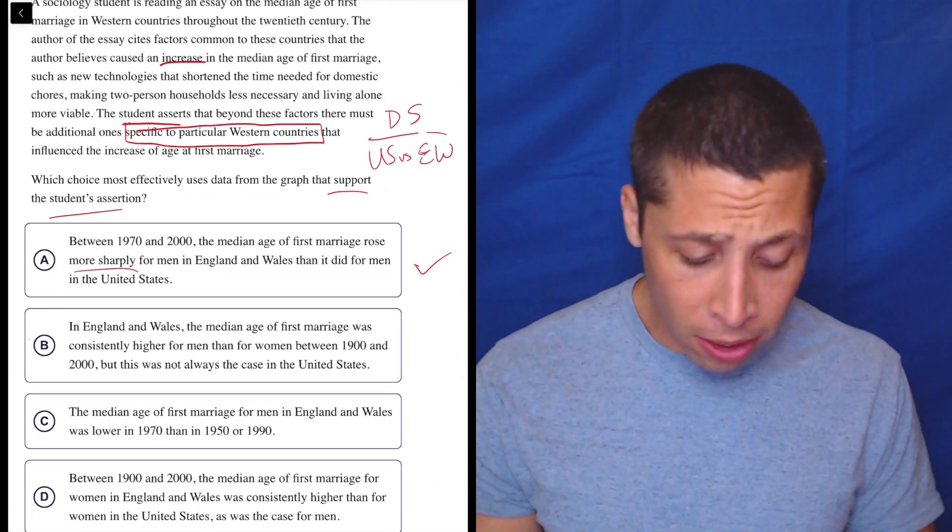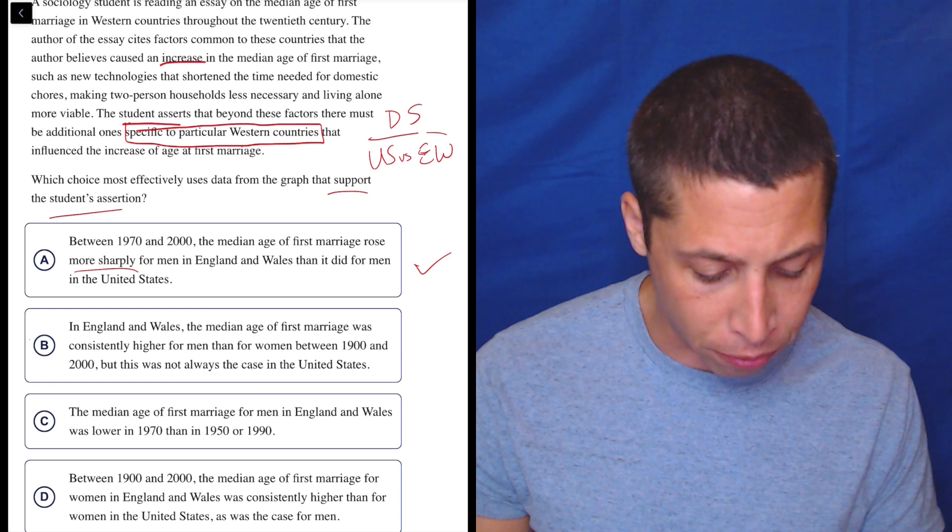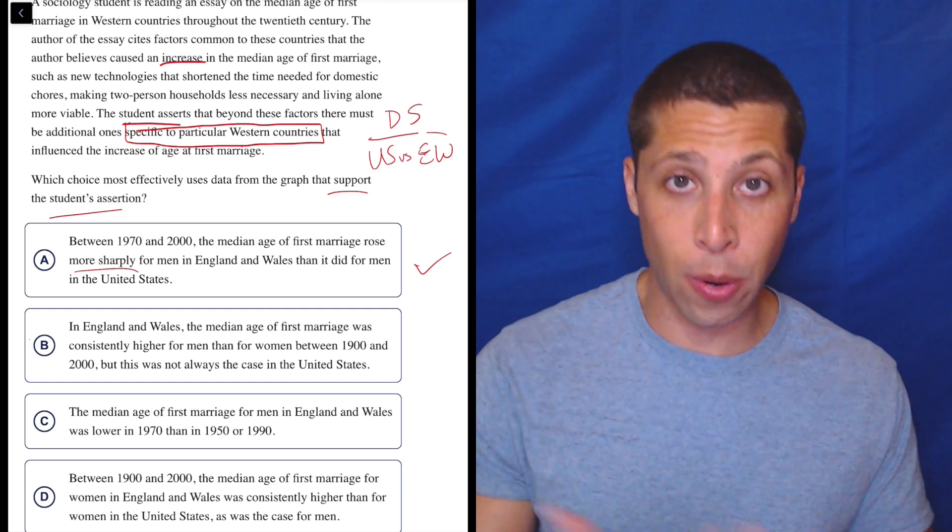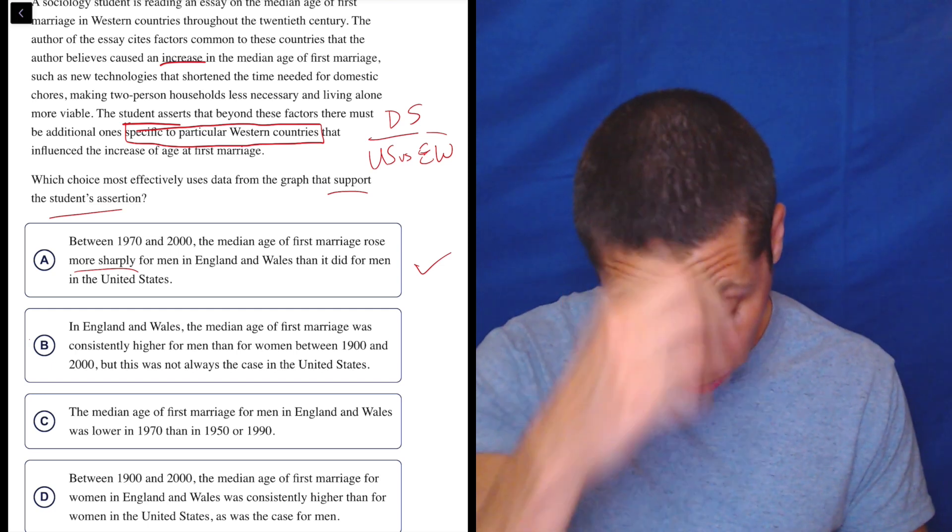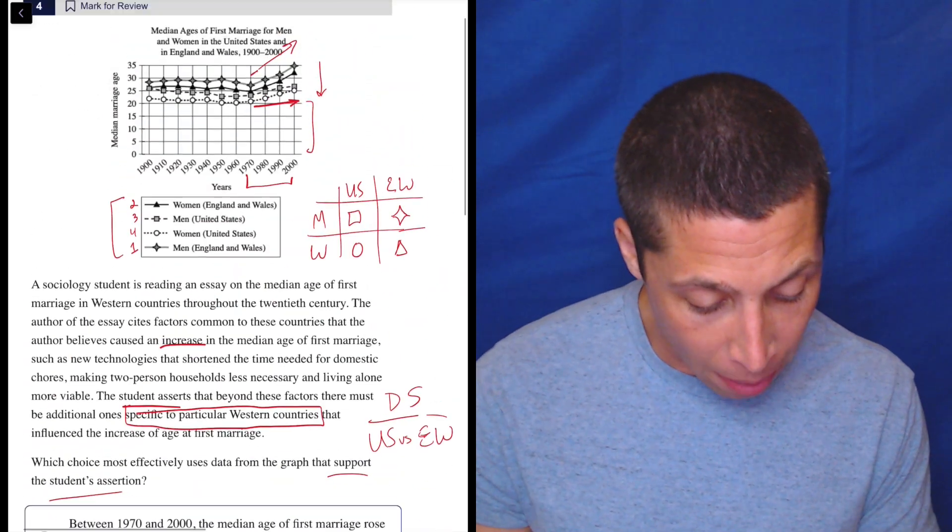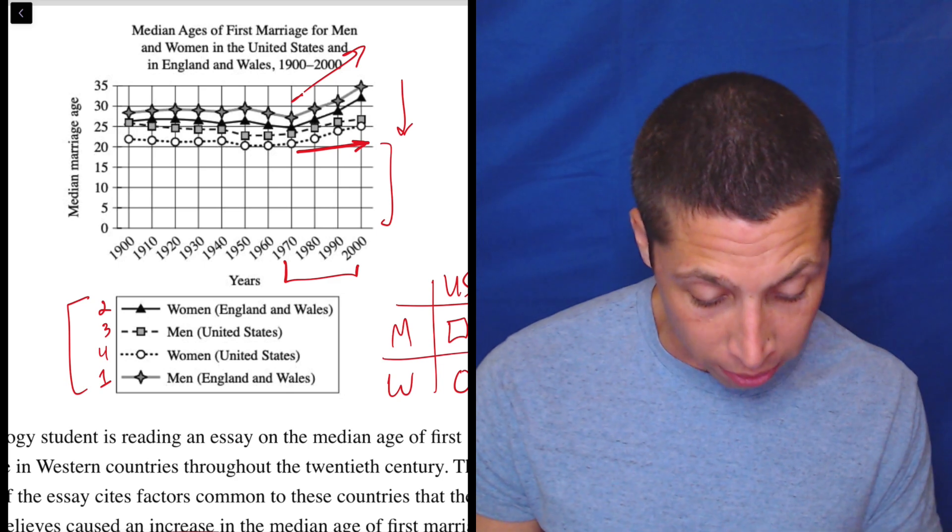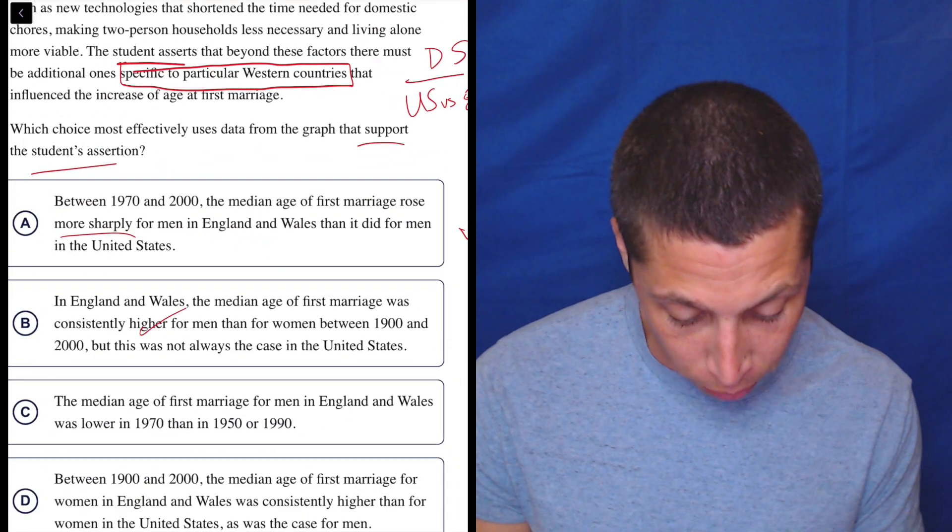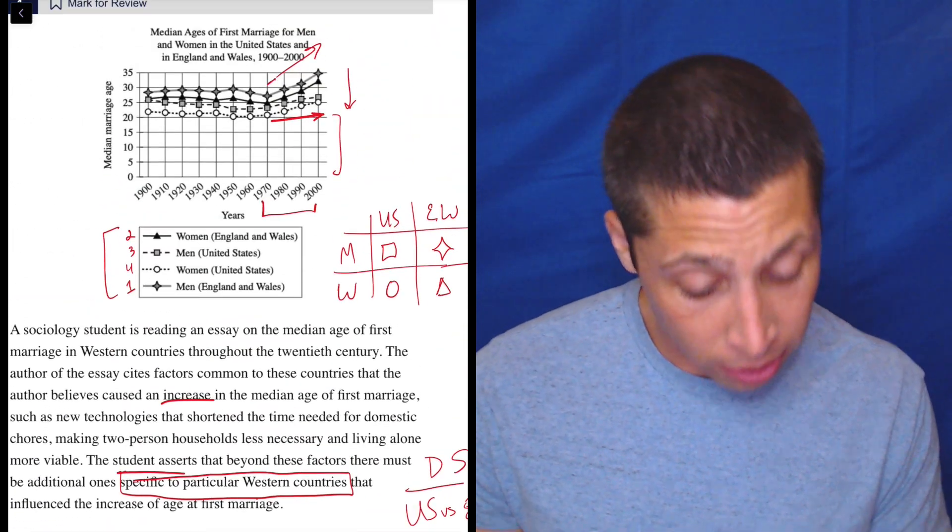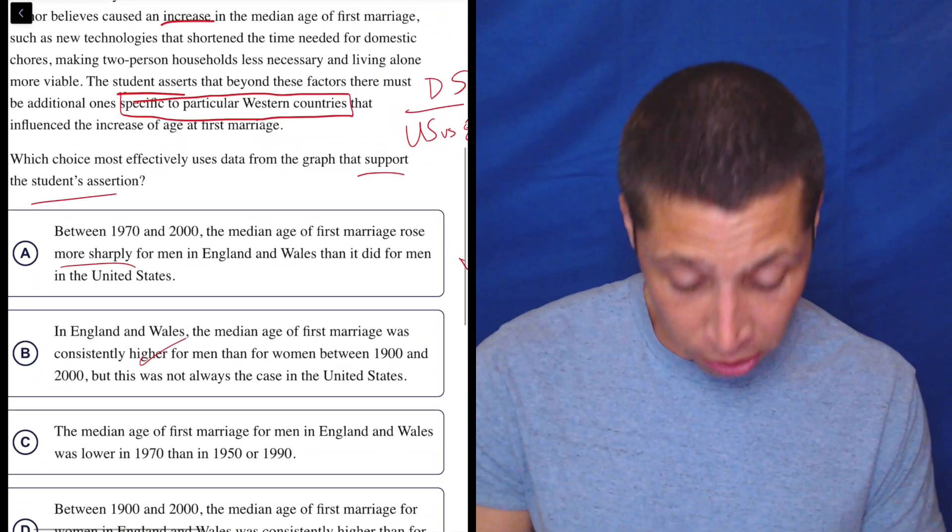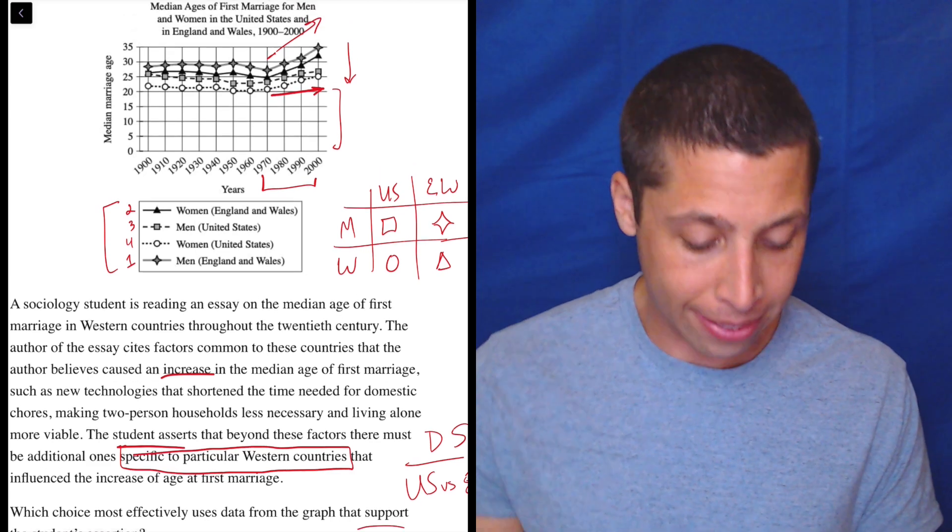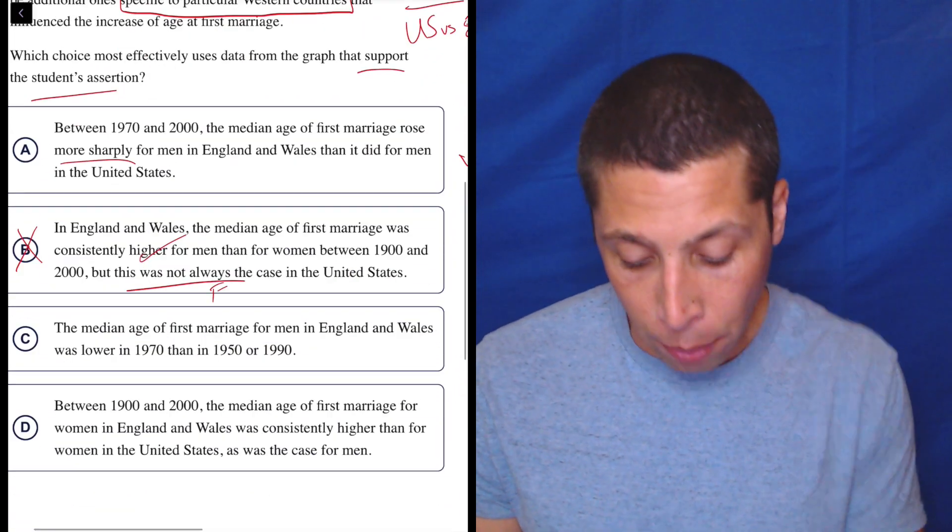Let's go to B. In England and Wales, the median age of first marriage was consistently higher for men than for women between 1900 and 2000, but this was not always the case in the United States. Again, this seems to be making a contrast. England and the US are different. So let's take a look. Is it true that the median age of first marriage was consistently higher for men than for women in England? Well, England is going to be the diamond versus the triangle. Diamond is always higher than the triangle. So that seems true. Then this is not always the case for the United States. So men versus women is square versus circle. Square seems to be higher than the circle. So it is always the case. There's no particular year here where it seems that the circle is higher than the square. So that's no good. So this is just plain old false and we can get rid of that.